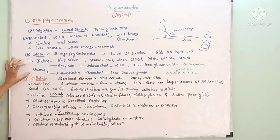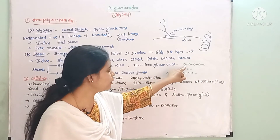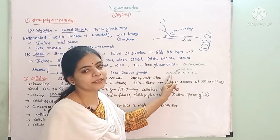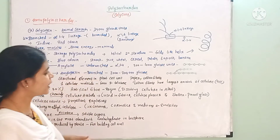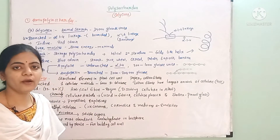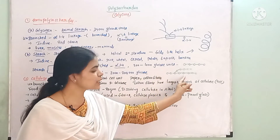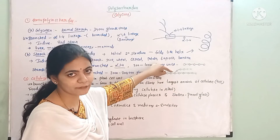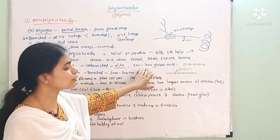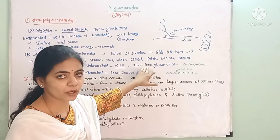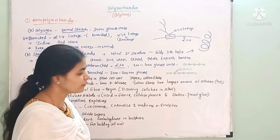Starch is of two types: amylose and amylopectin. Amylose is an unbranched structure using alpha 1,4 linkage. Amylopectin is a branched structure. Amylose contains 200 to 2000 glucose units, while amylopectin contains 2000 to 200,000 glucose units.